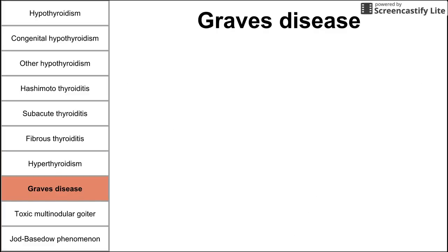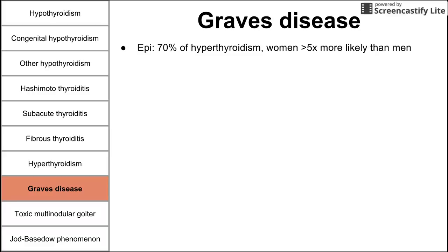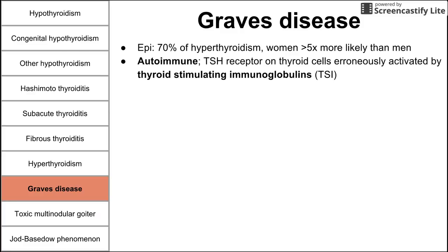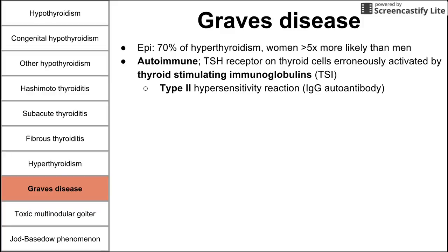Graves' disease is the most common cause of hyperthyroidism, accounting for about 70% of cases. Women are more than five times more likely than men to develop it. It is autoimmune in origin — TSH receptors on thyroid cells are erroneously activated by thyroid-stimulating immunoglobulins (IgG autoantibodies), a type 2 hypersensitivity reaction, causing the thyroid to overproduce hormone.